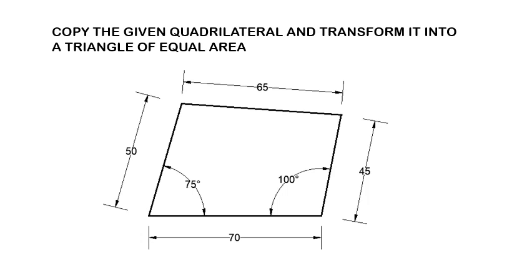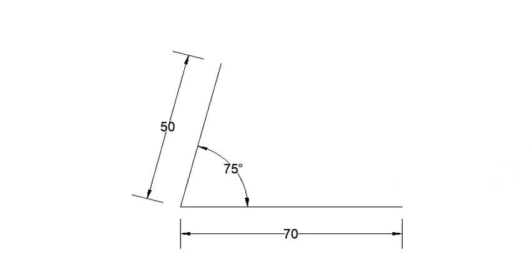copy the given quadrilateral and transform it into a triangle of equal area. So we copy that triangle, that quadrilateral, and start with a baseline of 70,